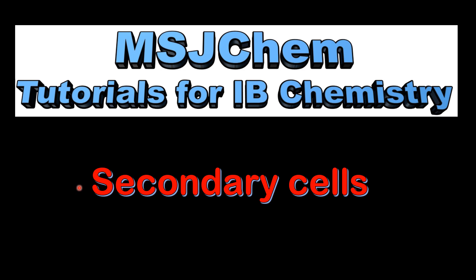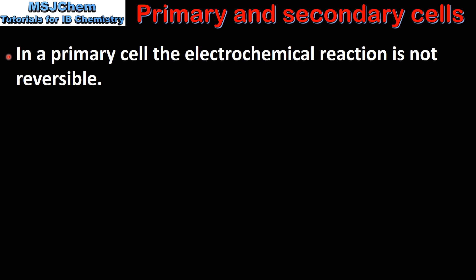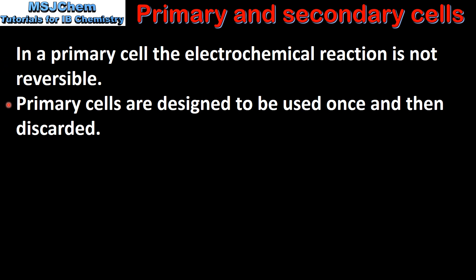This is MSJChem. In this video I'll be looking at secondary cells. We'll start by looking at the difference between a primary and secondary cell. In a primary cell the electrochemical reaction is not reversible. Primary cells are designed to be used once and then discarded.